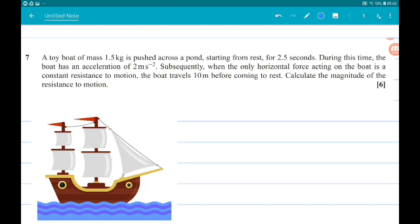A toy boat of mass 1.5 kilograms is pushed across a pond, starting from rest for 2.5 seconds. During this time, the boat has an acceleration of 2 meters per second squared. Subsequently, when the only horizontal force acting on the boat is a constant resistance force to motion, the boat travels 10 meters before coming to rest. Calculate the magnitude of the resistance to motion.